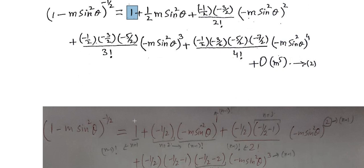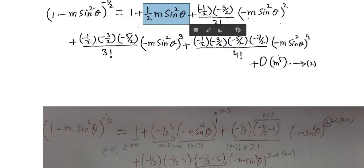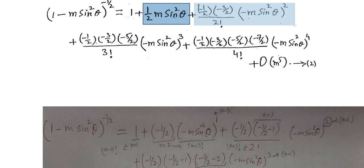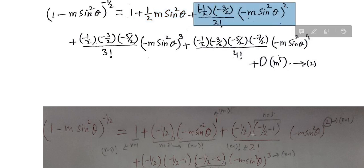For n=1 we have denominator zero factorial. For n=2 we have denominator one factorial. This is the third term for n=3. For n=2 we get the factor (−1/2)(−1) over two factorial, and for n=3 we continue writing the next term.